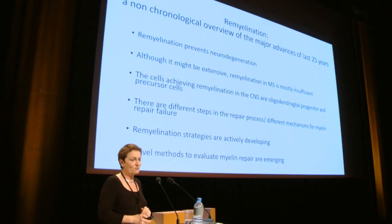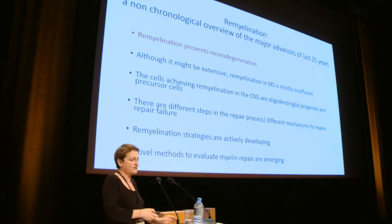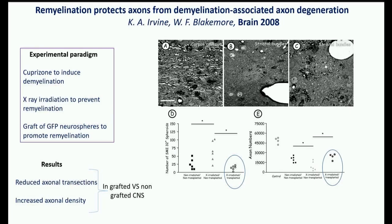Time has passed. The first major advance she presents is that remyelination prevents neurodegeneration. The first experimental demonstration was by Bill Blakemore in Cambridge, using a paradigm of cuprizone-induced demyelination, X-ray irradiation to prevent remyelination, and cell grafting to promote remyelination, which showed reduced axonal transaction and increased axonal density in grafted versus non-grafted animals.